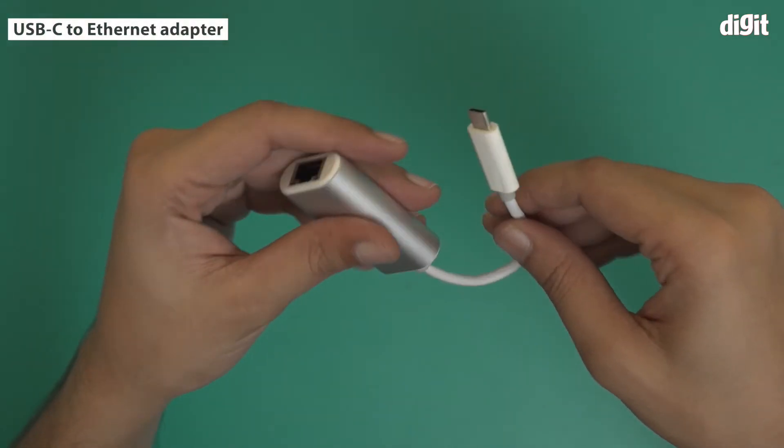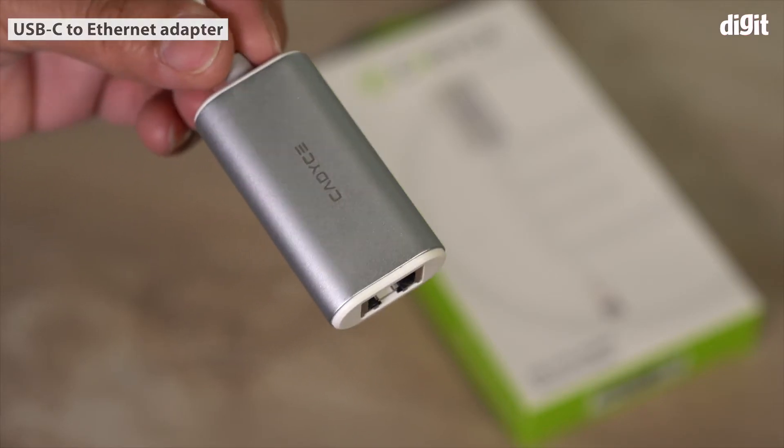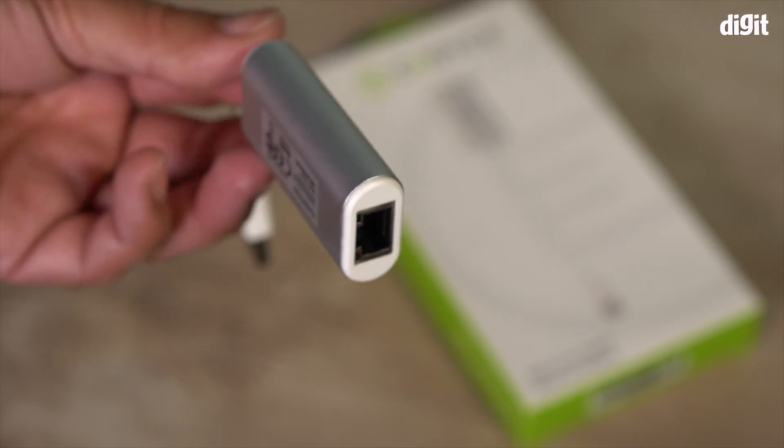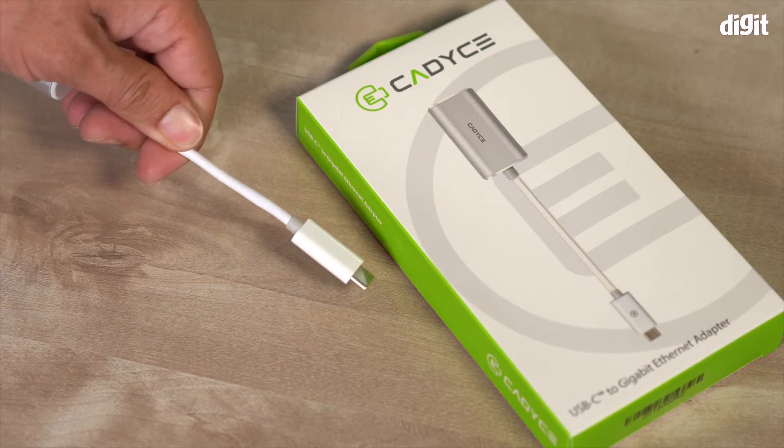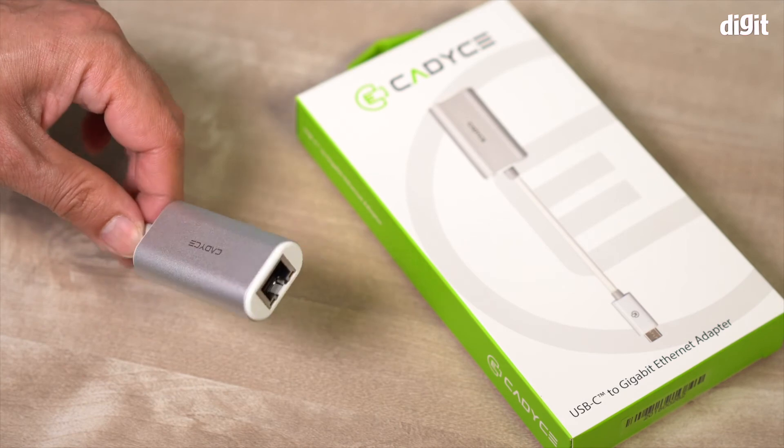Now let's take a look at the adapter itself. As you can see, this is a gigabit ethernet adapter which means that on one side you have USB-C, but on the other end you have a LAN port. This is your ethernet port.